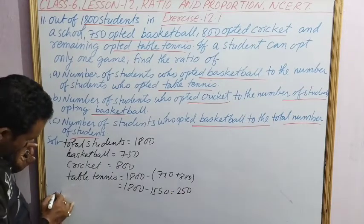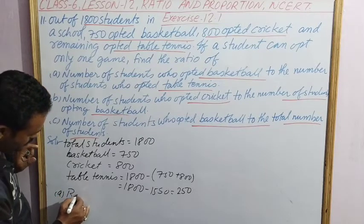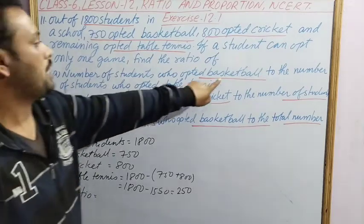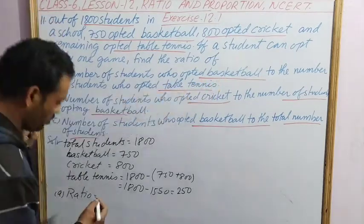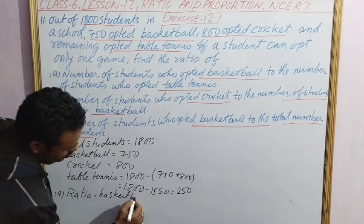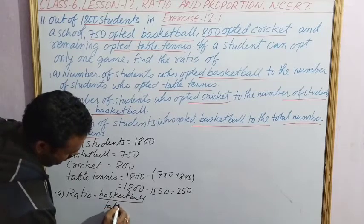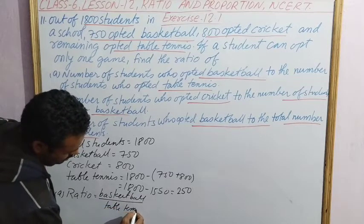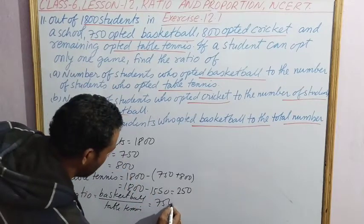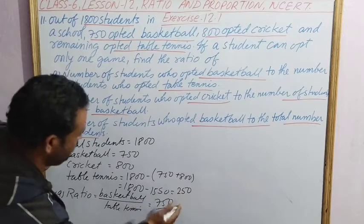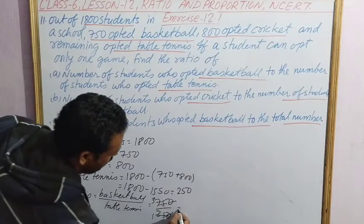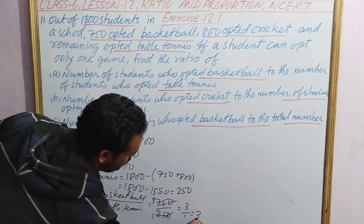First ratio is A: ratio between basketball to table tennis. So we write basketball by table tennis: basketball is 750, table tennis is 250. Simplify: that is 3 by 1, which is 3 is to 1. That is the first part.